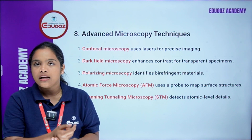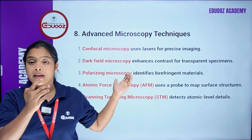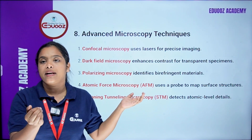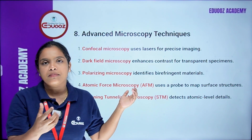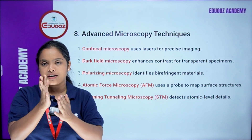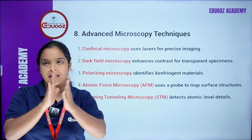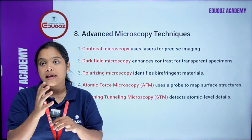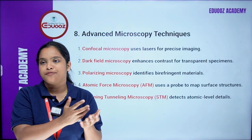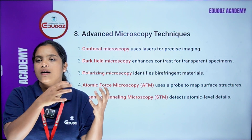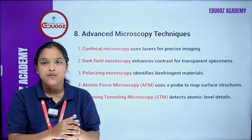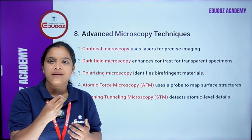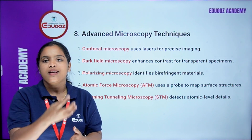Dark field microscopy is used for spirochetes. Polarizing microscopy identifies birefringent material, which is double-refraction material. Atomic force microscopy (AFM) uses a probe to map surface structure. Scanning tunneling microscopy detects atomic-level details.